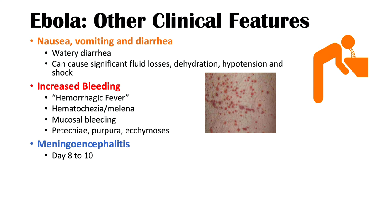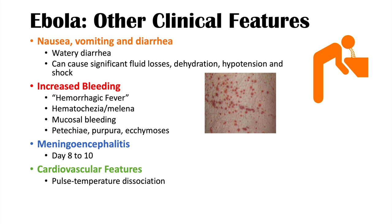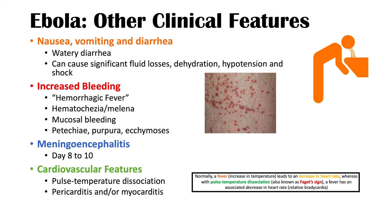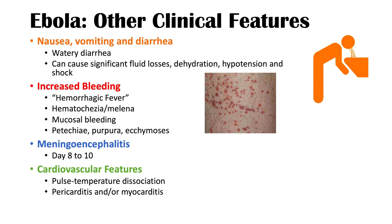Cardiovascular features can also be seen, including pulse-temperature dissociation, pericarditis — inflammation of the pericardium surrounding the heart — and/or myocarditis, inflammation of the heart muscle itself. Additionally, conjunctivitis and uveitis, inflammations of the eye structures, may occur.